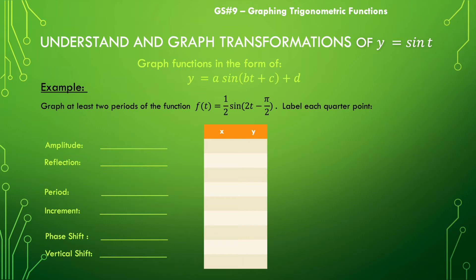So let's start by identifying those transformations and the key attributes of this graph. We know that the amplitude is going to be one-half. We know that there is not a reflection over the x-axis. We know that the period will become 2pi divided by the coefficient of t, which is 2, so 2pi over 2, which is pi. And we know we can find the increment by taking that pi and dividing it by 4, so pi over 4.